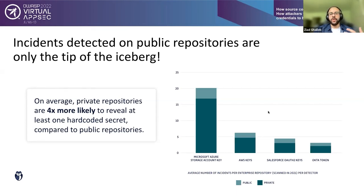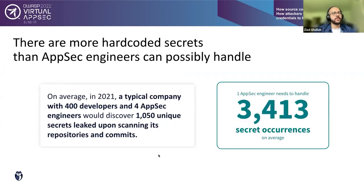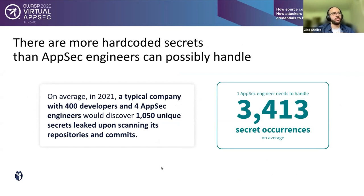The reason we believe this happens is that private repositories give developers a false sense of secrecy, permitting even more leaks to occur internally. This reveals the magnitude of secret sprawl in organizations. There are more hard-coded secrets in internal repositories than application security engineers can possibly handle. A typical company ratio we see is 100 developers to 1 AppSec engineer.